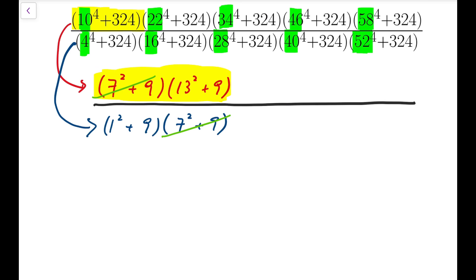So if we stick to the form x minus 3 whole squared plus 9 multiplied by x plus 3 all squared plus 9, you may see that for two consecutive terms, say, let's take 28 and 34 as an example.